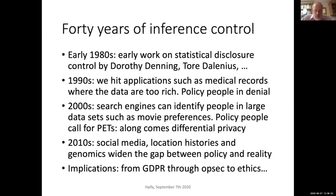The fourth wave over the last few years is around social media, location histories, and genomics. Vanessa already talked about location in the context of transport tickets, but there's so much more which continues to widen the gap between policy and reality. This leads to implications from GDPR through operational security and how that affects individual privacy and ethics, which has an effect on research. As this is a two-hour slot, I'll probably call a break after the first four sections.